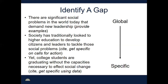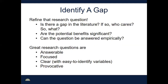So now we're focused: there are big social problems, and higher education is supposed to graduate people to fix those problems. Yet college students are graduating without the capacities necessary to affect social change. In each step of this, you need to cite your information, get really specific, and use data to back up those claims. That's traditionally how we write a problem statement.